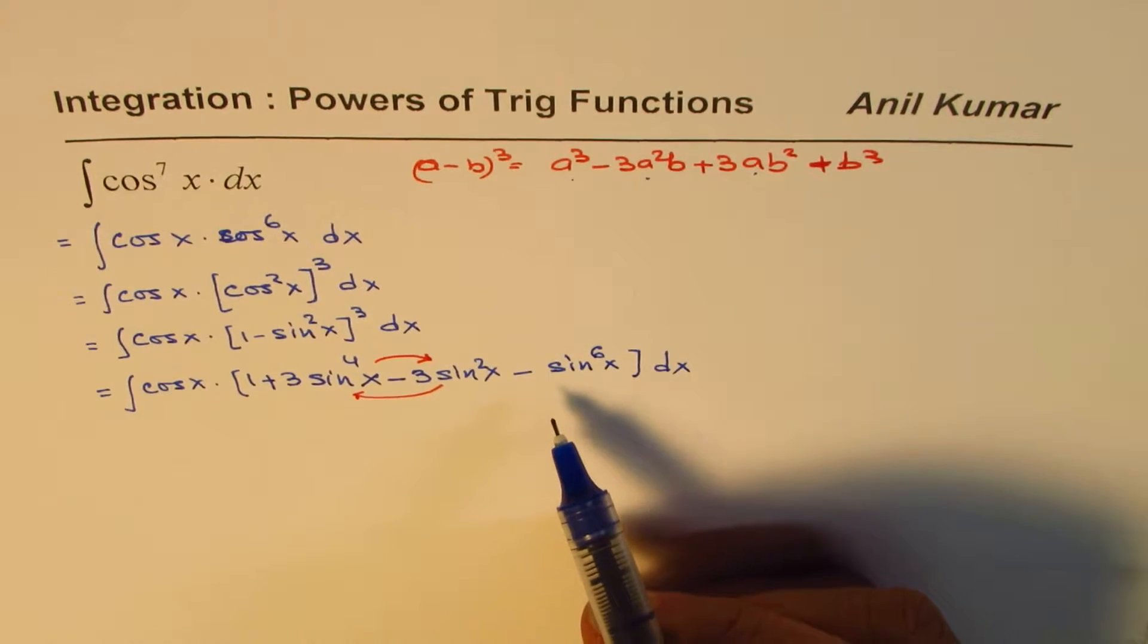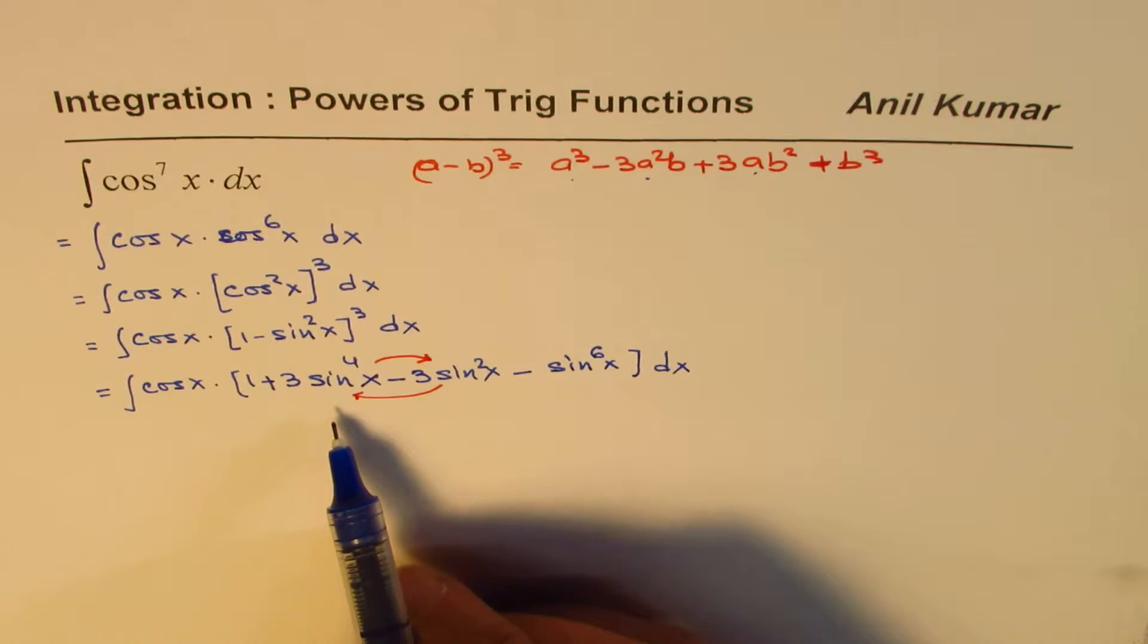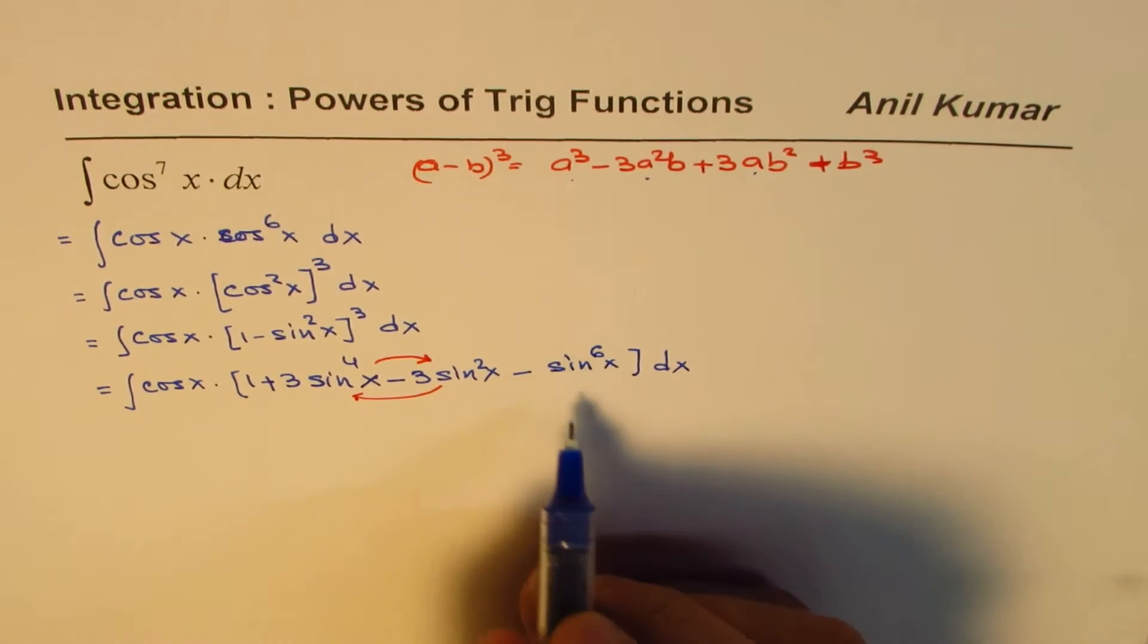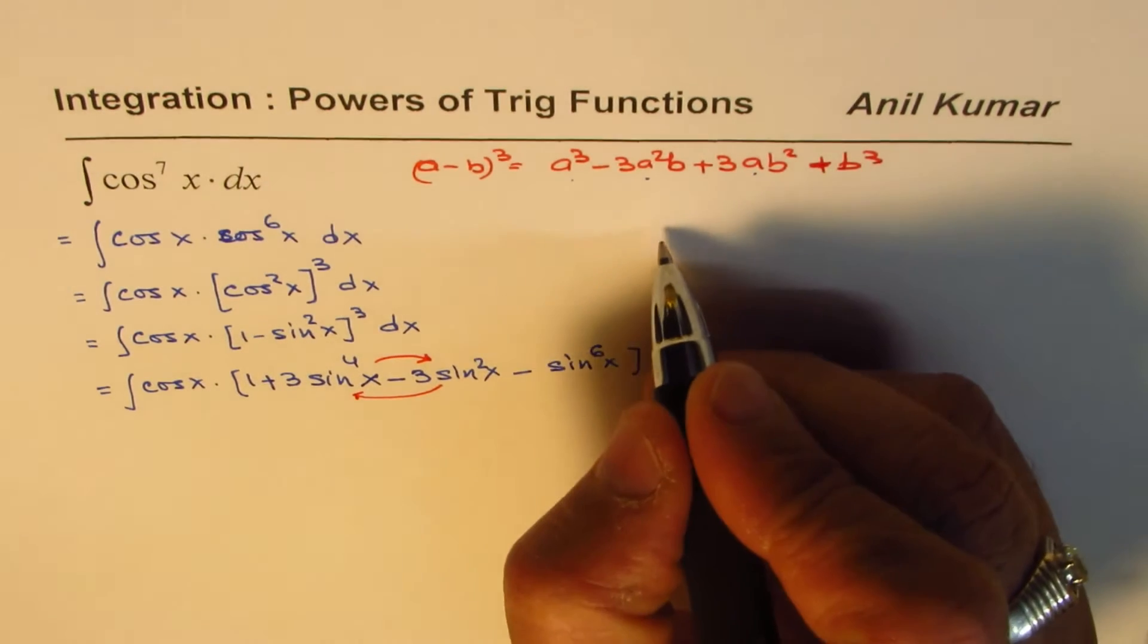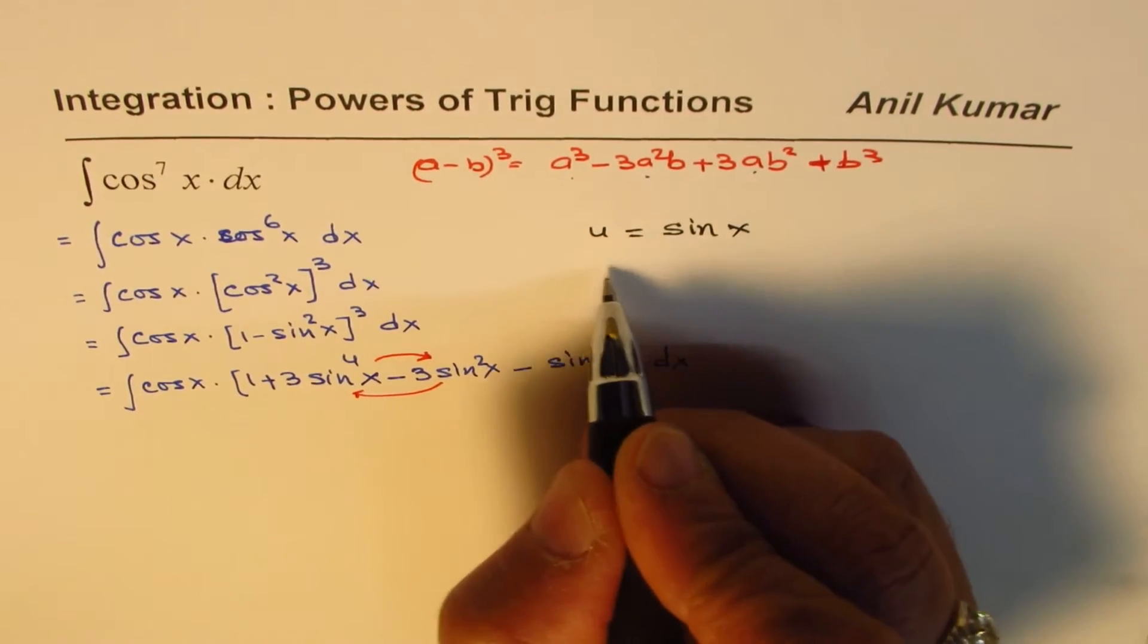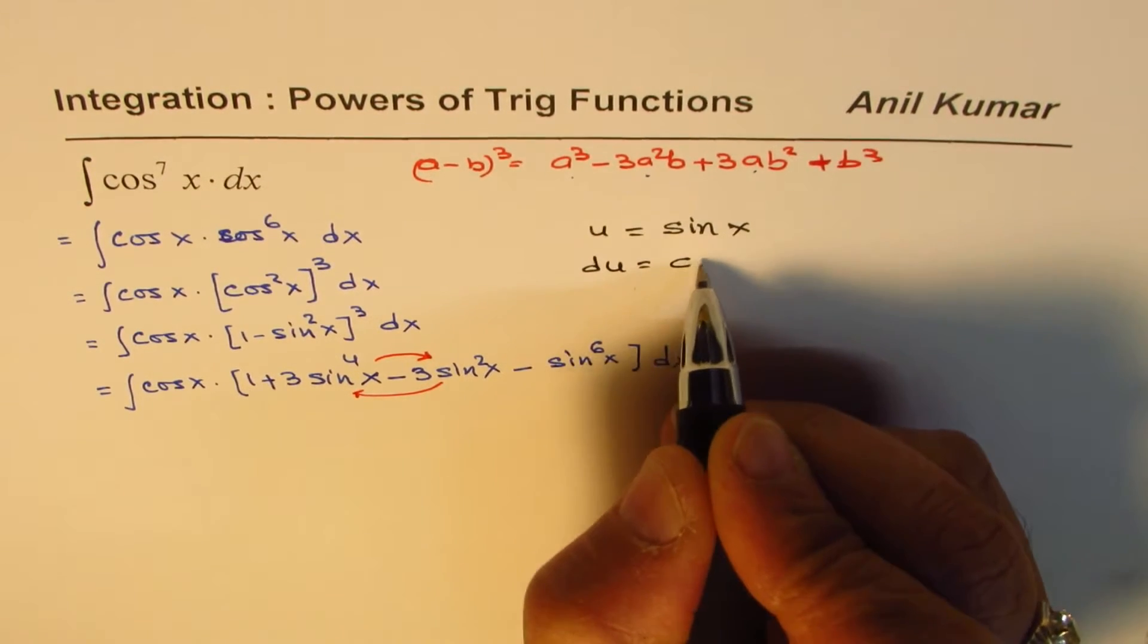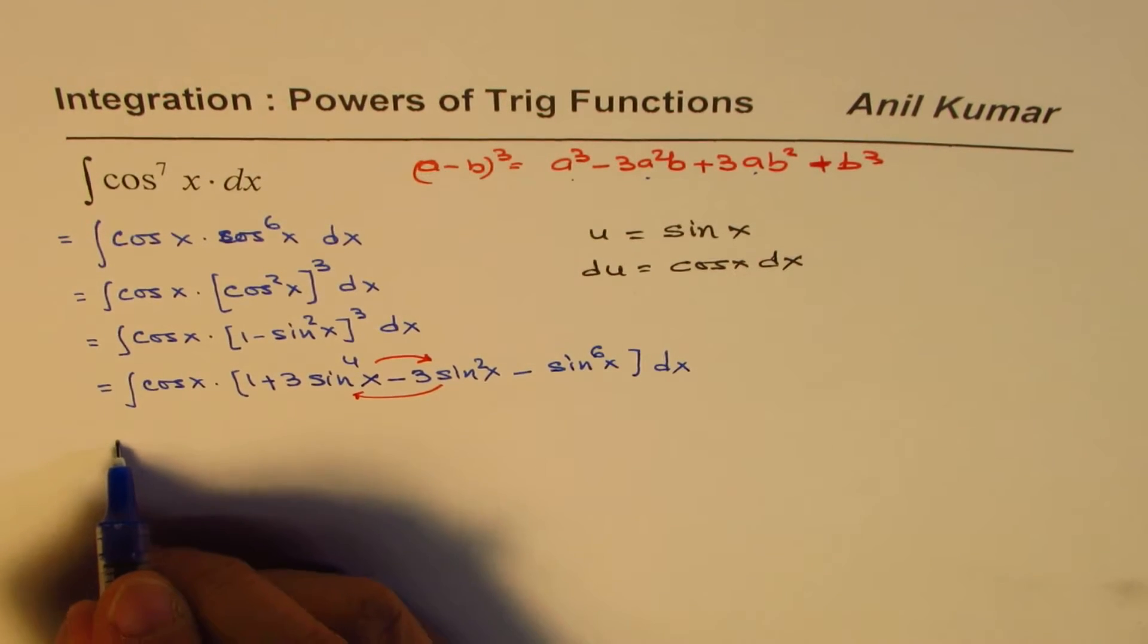Okay. Now, if that is the function, what we can do is we can now do the substitution. So if I substitute sine x as, let us say, u. In that case, du will be equal to cos x dx, correct?